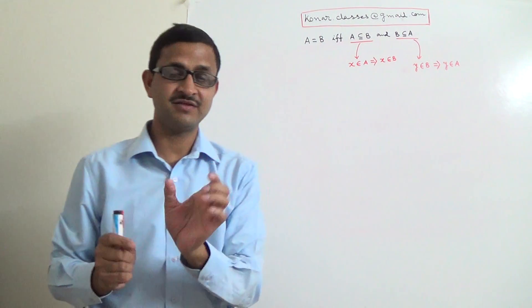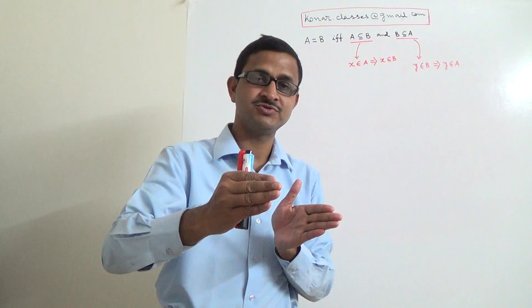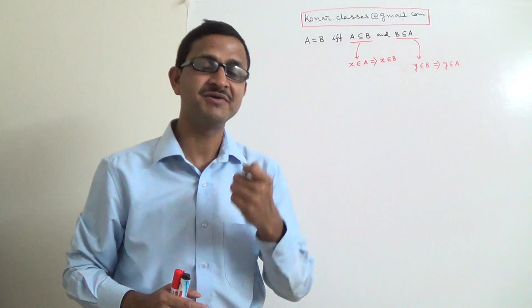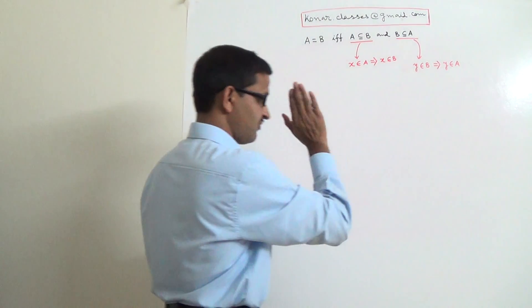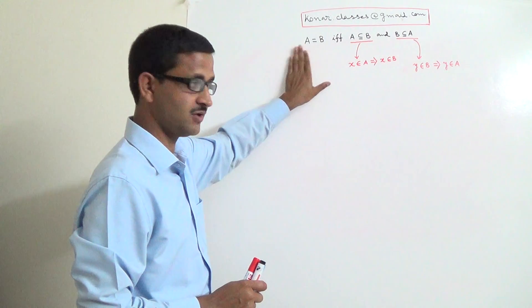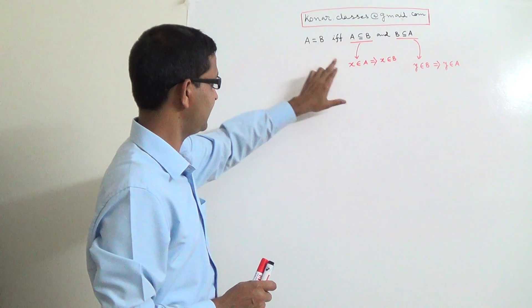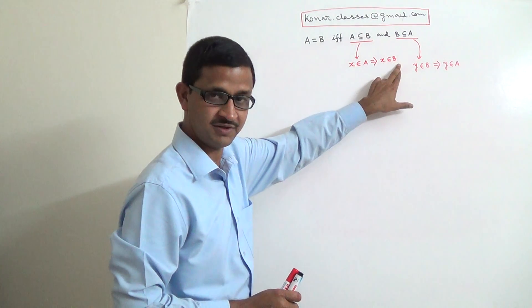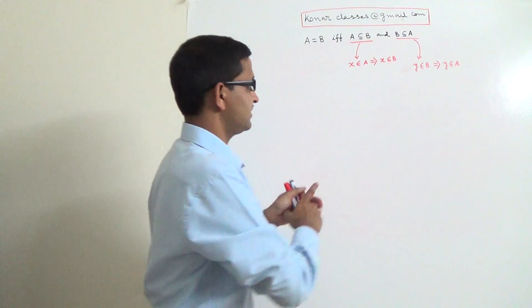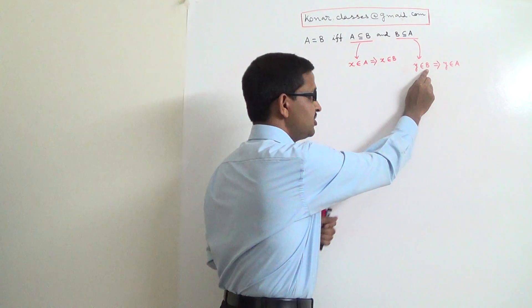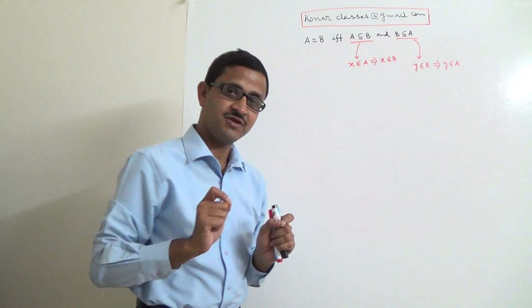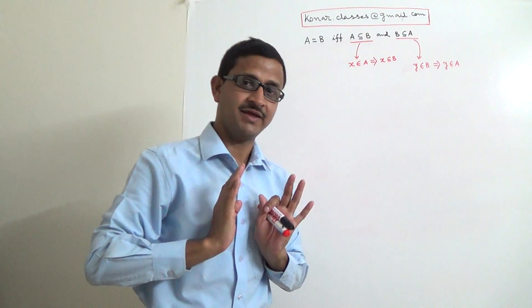Sometimes sets are not a single thing — they are a composition of several sets by means of operations: union, intersection, complement, difference, symmetric difference. To prove A equals B: first take an element X of A and prove X belongs to B, proving A is a subset of B. Second, take an arbitrary element Y in B and prove Y belongs to A, proving B is a subset of A. When both hold true, you can conclude A equals B.